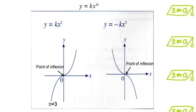The graph of y equals kx cubed where n is equal to 3 has the point of inflection at (0, 0). For y equals kx cubed, the curve changes from concave upwards to concave downwards, while for y equals negative kx cubed, the curve goes from concave downwards to concave upwards.